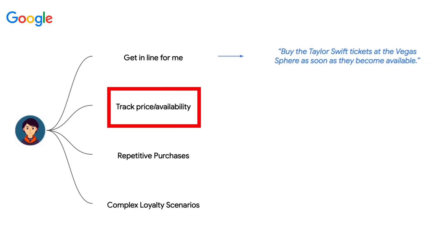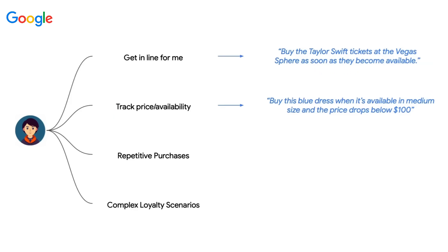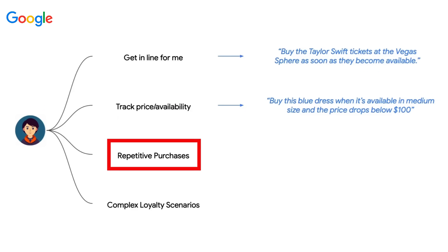Another use case is just finding something that you want to buy. Imagine you see a piece of clothing, you screenshot it, give it to an agent, it works out what that brand is, and then goes off on the web and scours for where it's available and what the price is. And if you've given it a budget — say, if this is less than $30 — it can automatically buy it and get it sent to your house.